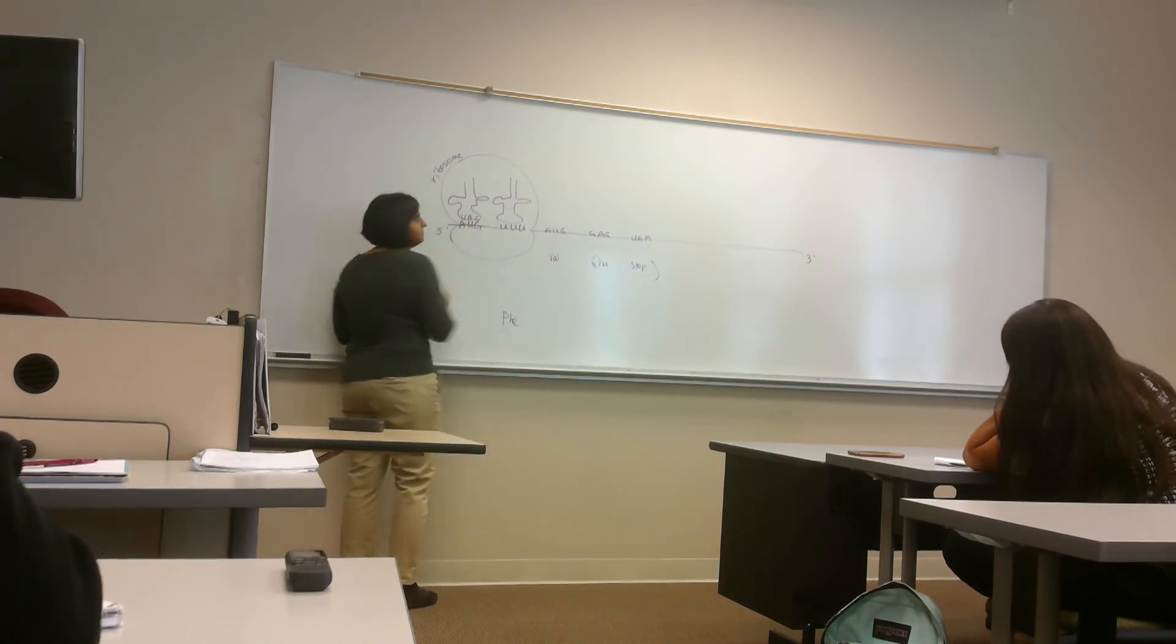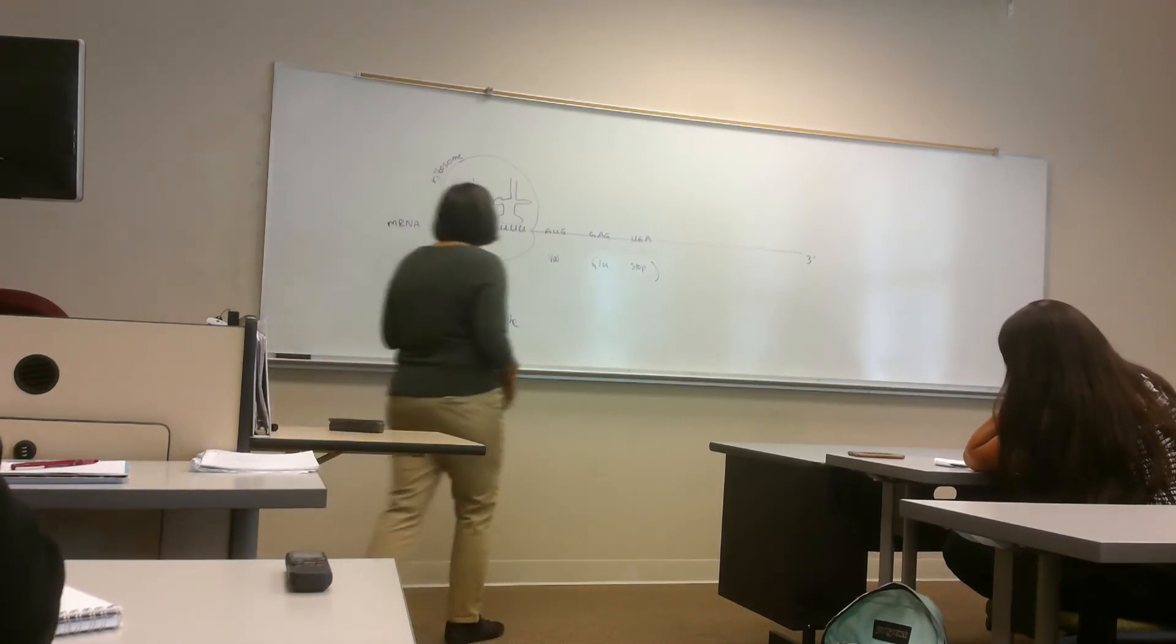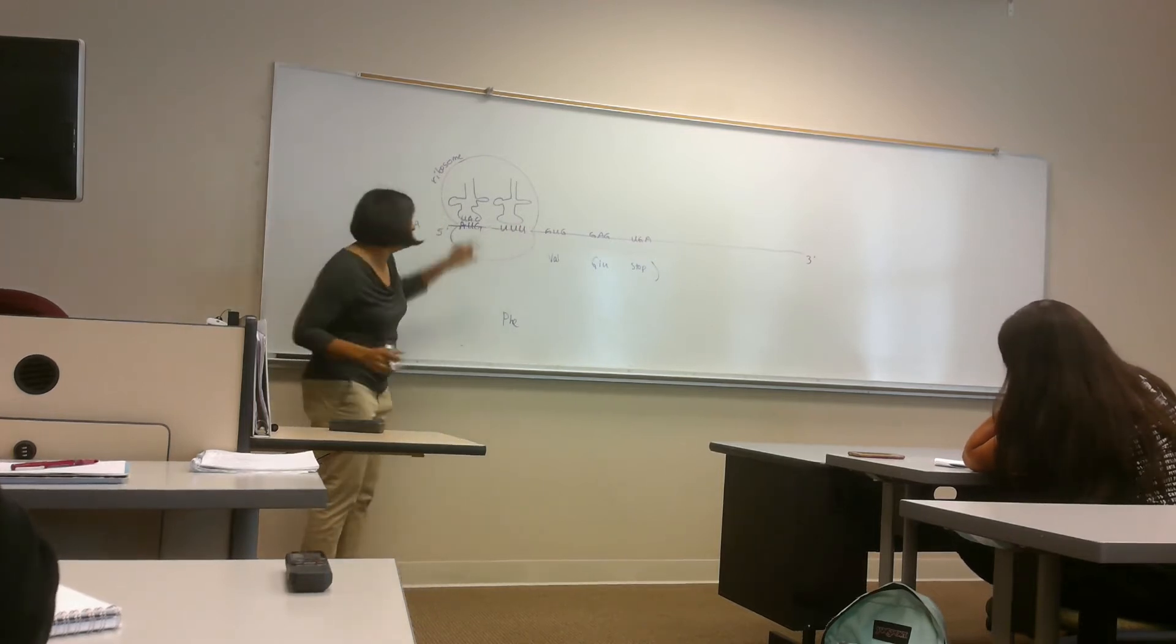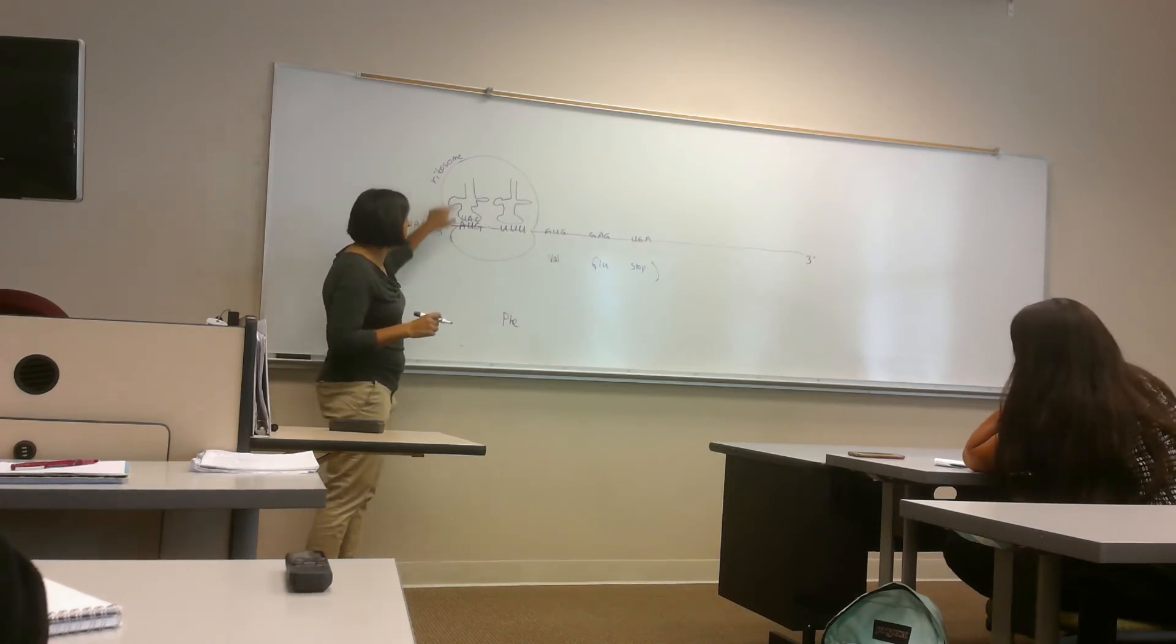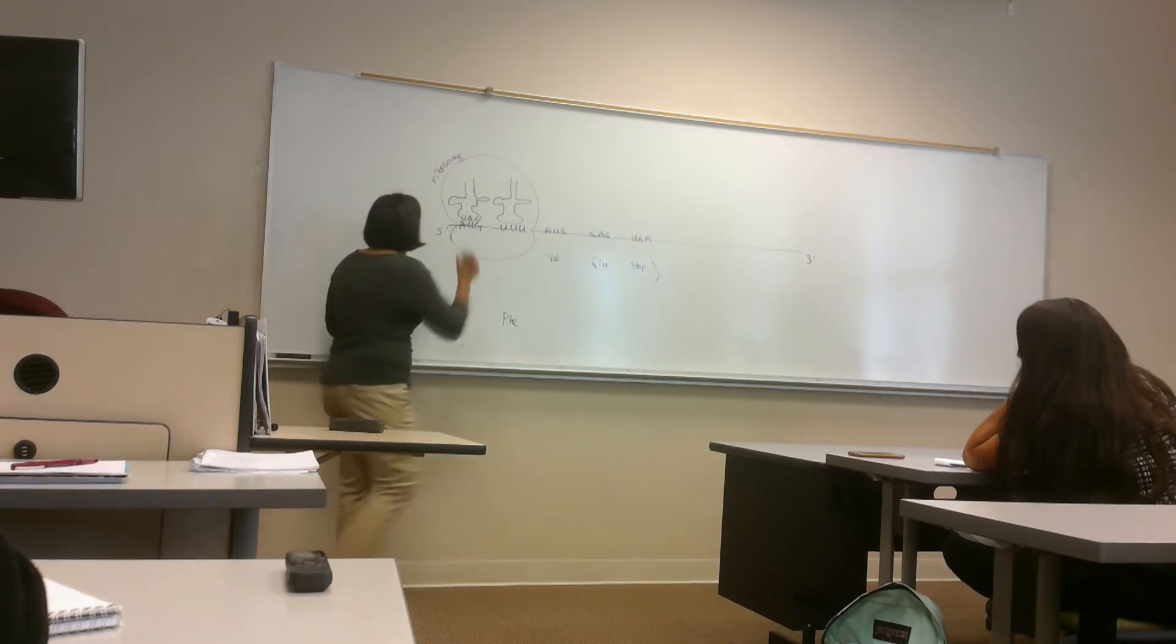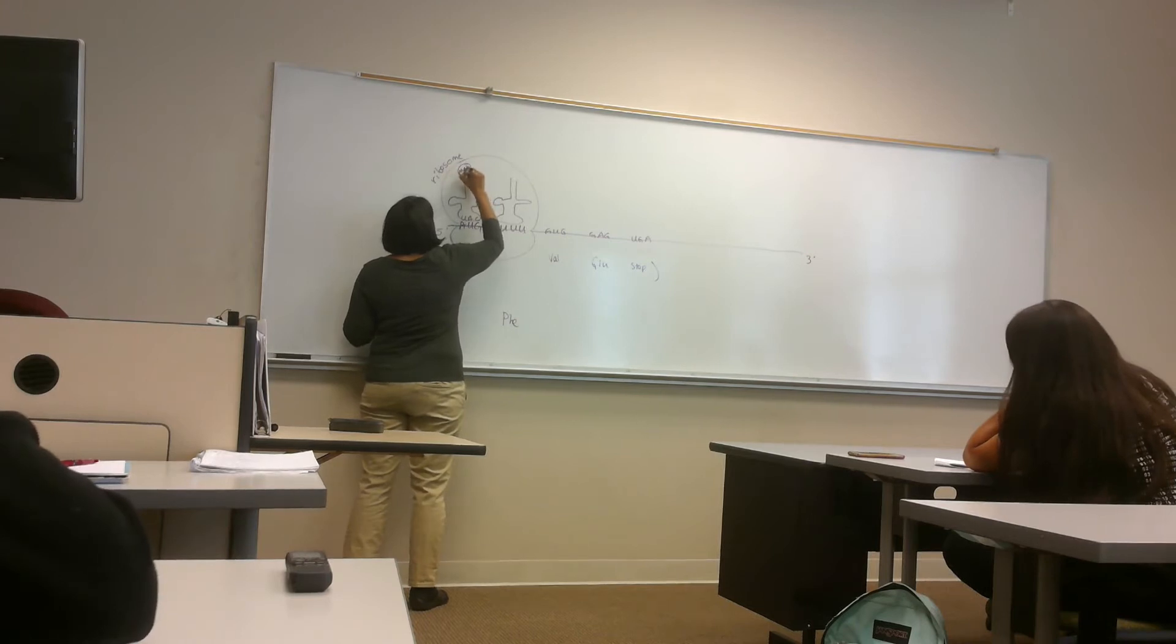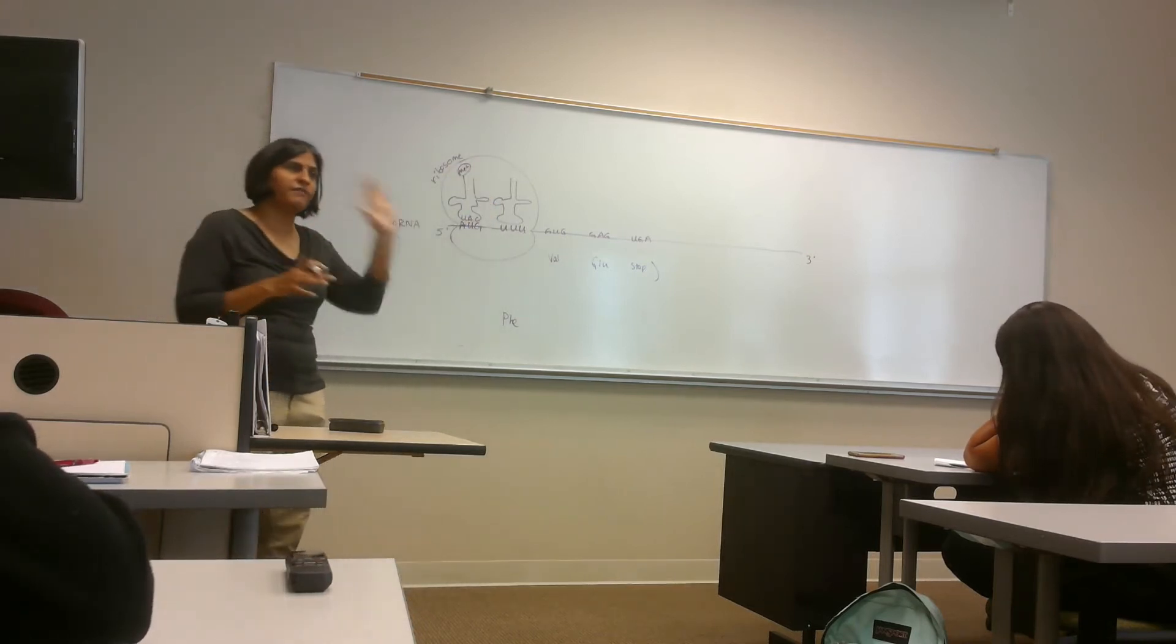Now, it turns out, the enzymes that add the amino acid to the tRNA molecule know what amino acid to add by looking at the anticodon. So on all the tRNAs that have a UAC, they add methionine. Does that make sense? So whenever you have the UAC anticodon, they add methionine.